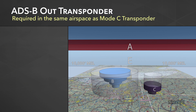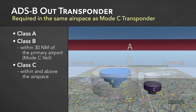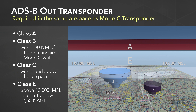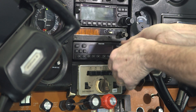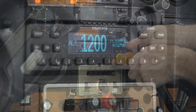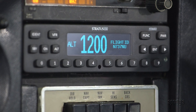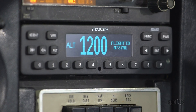Where do you need ADS-B Out? In short, anywhere you need a Mode C transponder today. That includes Class A, B, and C airspace, plus Class E airspace above 10,000 feet but not below 2,500 feet. You'll also need ADS-B Out within 30 miles of large airports, commonly called the Mode C veil. This ADS-B Out transmitter must be a panel-installed solution that meets FAA performance requirements and it must include a WAAS GPS source as well.